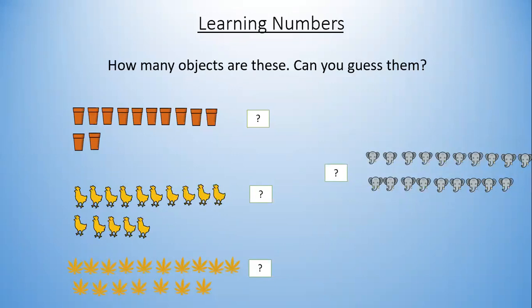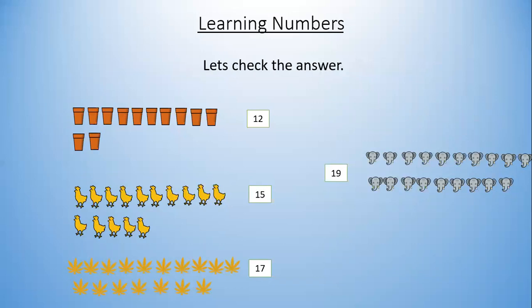How many elephants are here? 1, 2, 3, 4, 5, 6, 7, 8, 9, 10, 11, 12, 13, 14, 15, 16, 17, 18, 19. 19 elephants are here. Now let's check them. Yes, you did right. 12 pots, 15 hands, 17 flowers, and 19 elephants.